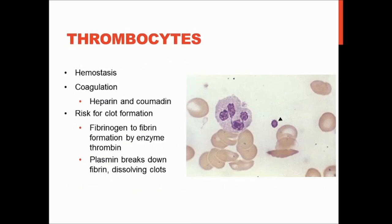Thrombocytes, or platelets, are responsible for clotting our blood, or else we would bleed to death. They are very tiny. Platelets are responsible for hemostasis, which is the general clotting of the blood if you are bleeding — the immediate stoppage of blood from a blood vessel. Coagulation happens afterwards and forms a sturdier clot, done by the formation of fibrin.